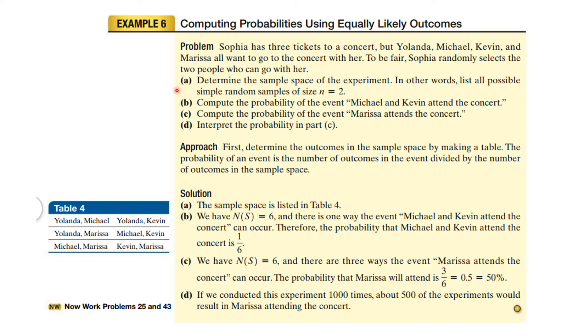Okay, now there's another problem. Sophia has three tickets to a concert, but Yolanda, Michael, Kevin, and Marissa all want to go with her. So she randomly selects two people to go with her. And so what's the sample space? Compute the probability that Michael and Kevin come. Compute the probability that Marissa attends and interpret the probabilities.